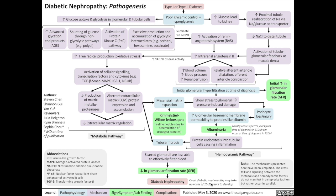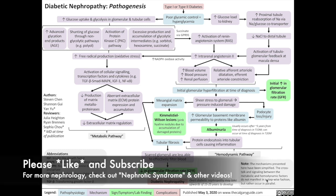Note that overt diabetic nephropathy may take upwards of 15 to 20 years to develop after the onset of diabetes. Also note that the mechanisms presented here have been simplified — the crosstalk and signaling between the metabolic and hemodynamic factors do not manifest in a stepwise fashion, but rather occur in parallel. And that's all for the pathogenesis of diabetic nephropathy. For more on nephrology topics, check out my videos on nephrotic syndrome and pitting versus non-pitting edema, as well as other topics in the Calgary Guide video series playlist. Thanks for watching, and see you in the next video.